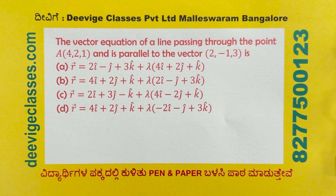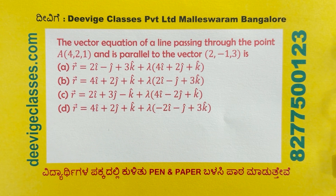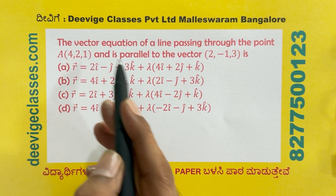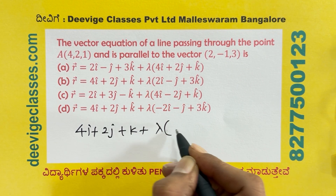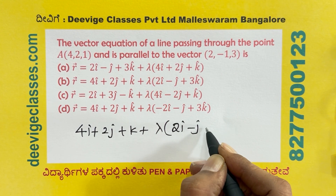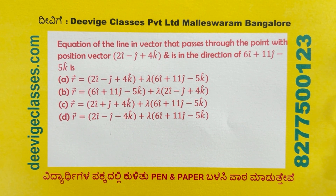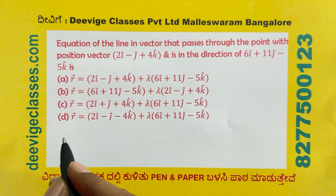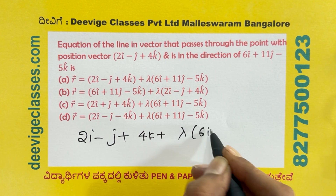The vector equation of the line passing through the point (4, 2, 1) and parallel to the vector (2, minus 1, 3) is: R = (4i plus 2j plus k) plus lambda (2i minus j plus 3k). The vector equation of the line passing through position vector 2i minus j plus 4k in direction 6i plus 11j minus 5k is: R = (2i minus j plus 4k) plus lambda (6i plus 11j minus 5k).